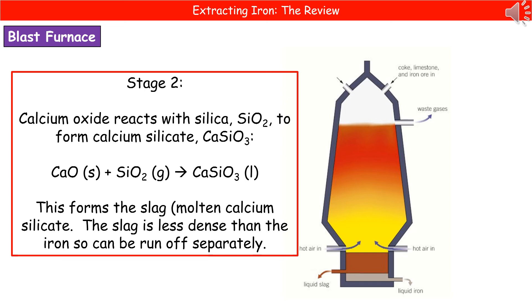We form this molten calcium silicate, also known by the, for some reason, highly amusing name of slag. And the slag is actually less dense than the iron.